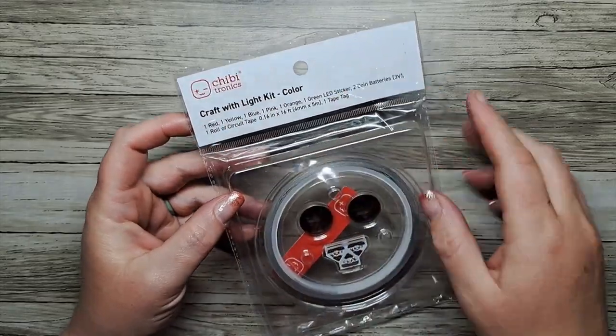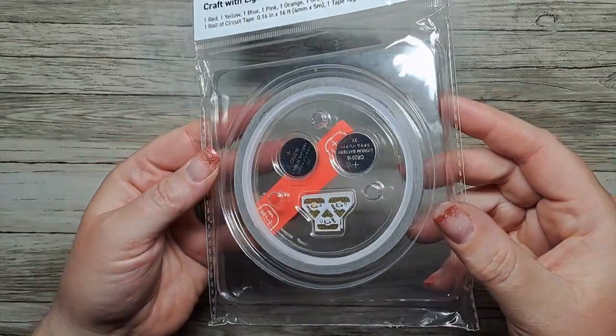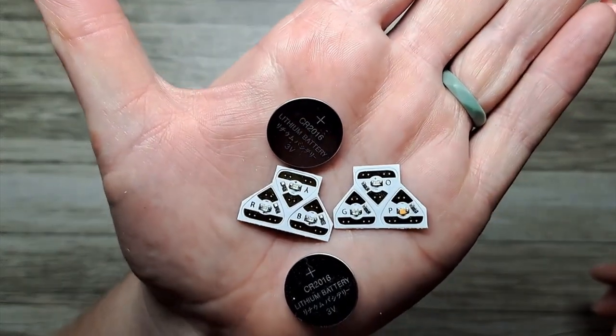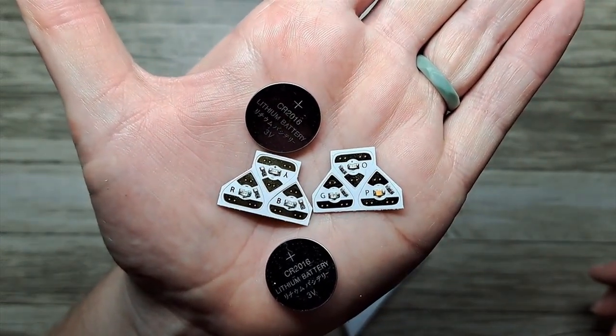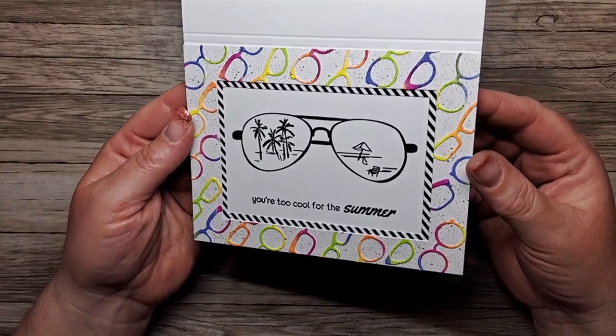We're going to be using the craft with light kit. This includes colored LEDs. We have six LED lights: red, yellow, blue, green, orange, pink, and a couple of batteries.